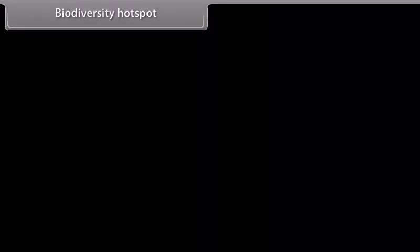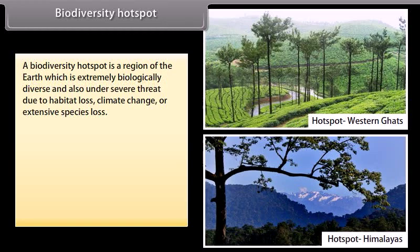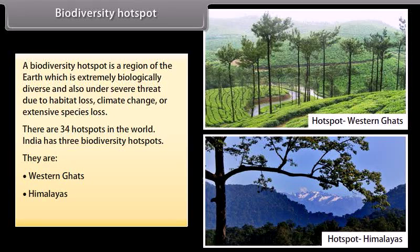A biodiversity hotspot is a region of the earth which is extremely biologically diverse and also under severe threat due to habitat loss, climate change, or extensive species loss. There are 34 hotspots in the world. India has three biodiversity hotspots: the Western Ghats, the Himalayas, and the Indo-Burma region.